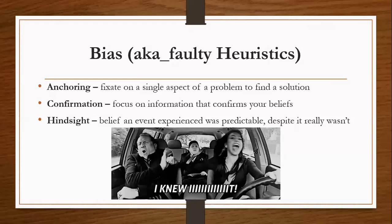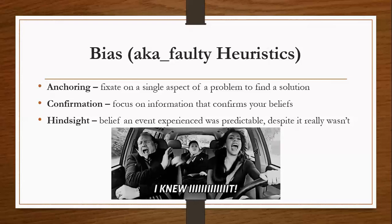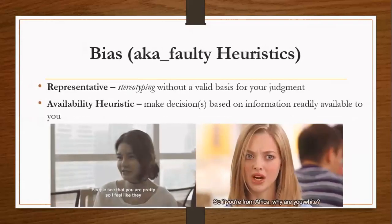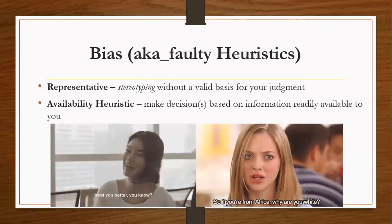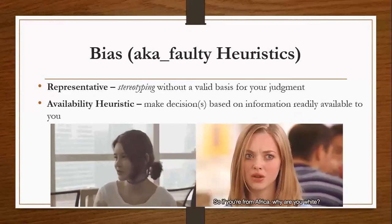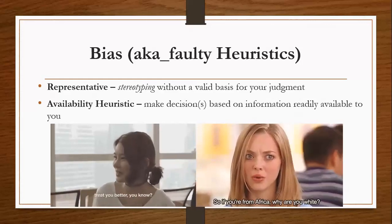There are hindsight biases — the belief that an event or experience was predictable despite the fact that it really wasn't. A lot of times when you hear people say 'I knew it,' they were probably engaging in hindsight bias. Another bias is representative bias — when we are stereotyping without a valid basis for judgment. One unfortunate stereotype is known as the 'what is beautiful is good' effect, exhibited in this representative heuristic when we go with whatever looks good because of a stereotype in our mind.